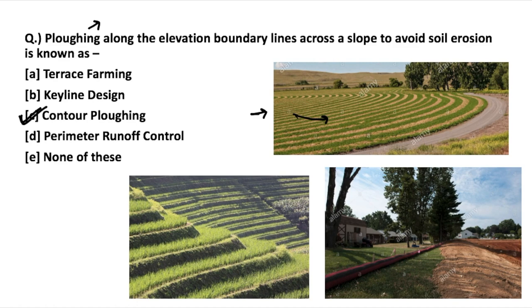We have already discussed rill erosion and gully erosion in the previous video — you can refer to the ARD question series for that explanation. During heavy water runoff, which is a major cause of soil erosion, it is stopped by this contour plowing.